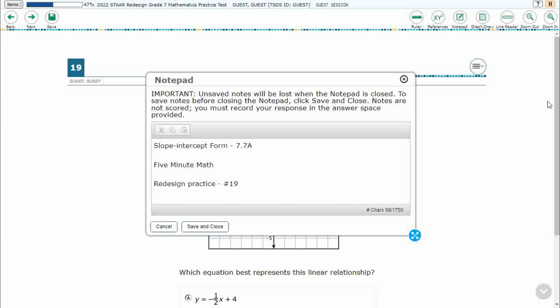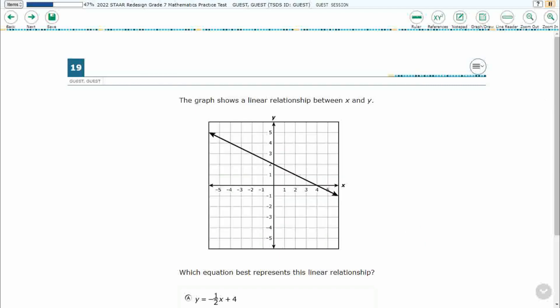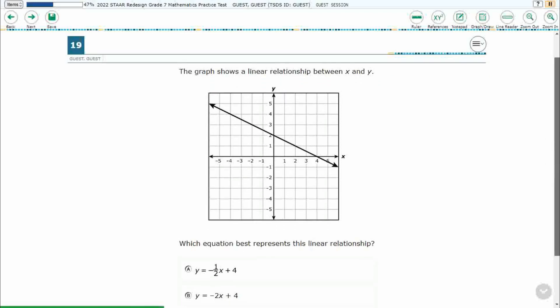Hello and welcome to 5-Minute Math. Today we are looking at the 7th grade concept of slope intercept form. This is standard 7.7a in the great state of Texas and we are using item number 19 off the redesigned practice online star test.